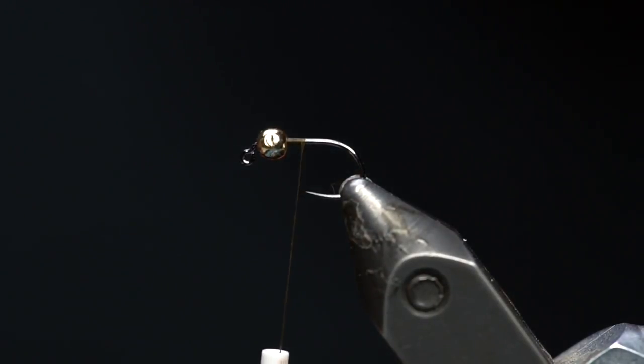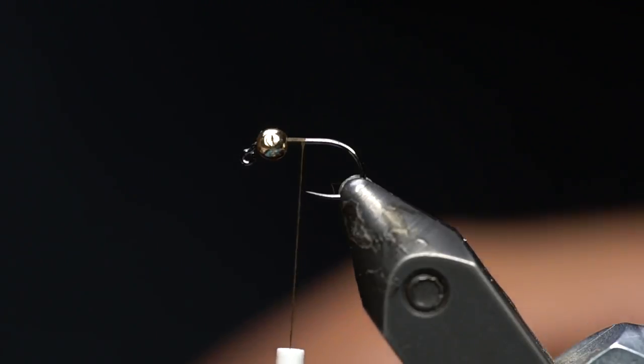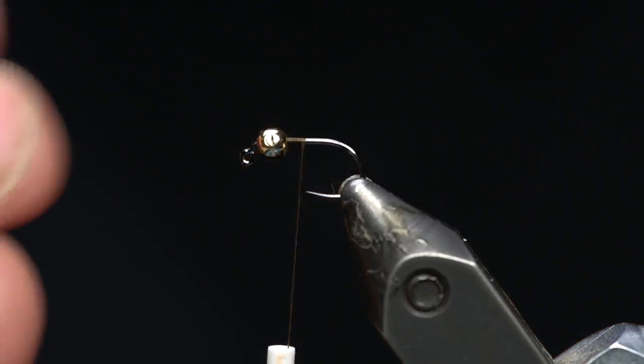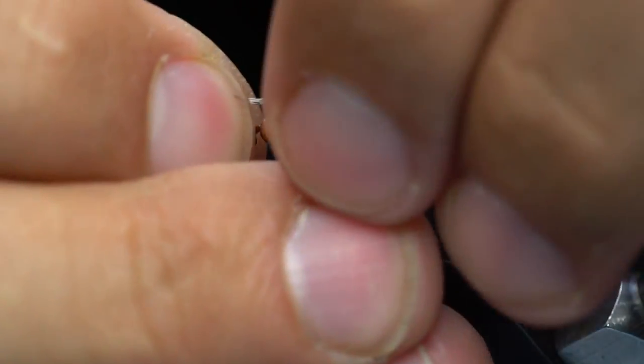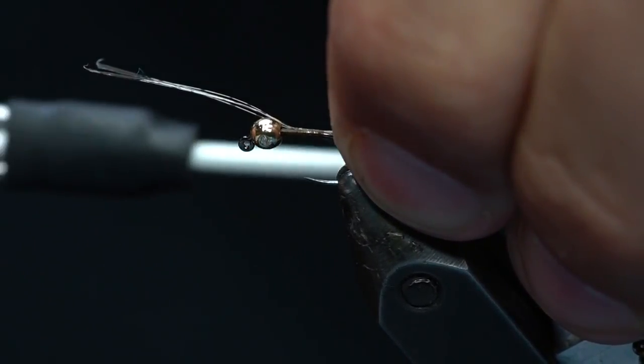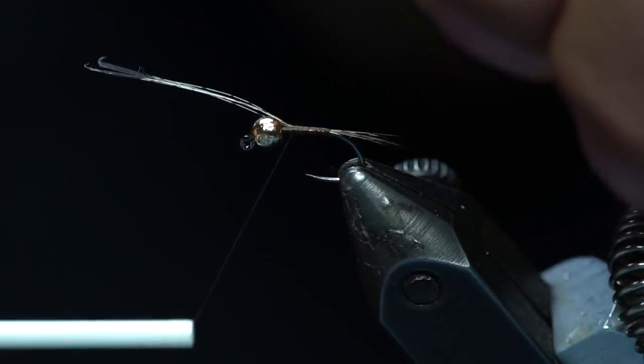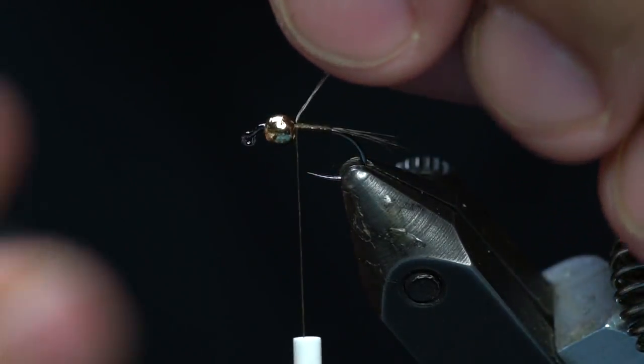And we're gonna use a little bit of Coque de Leon for the tail. Grab half a dozen or less fibers there. Measure that up and tie that in. And we'll cut off the excess there.